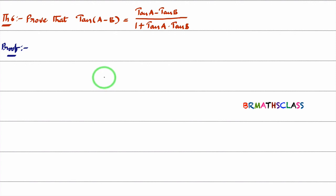In this class, we will learn the proof of tan(A-B). The tan formula is tan A minus tan B whole divided by 1 plus tan A into tan B. To prove this result...